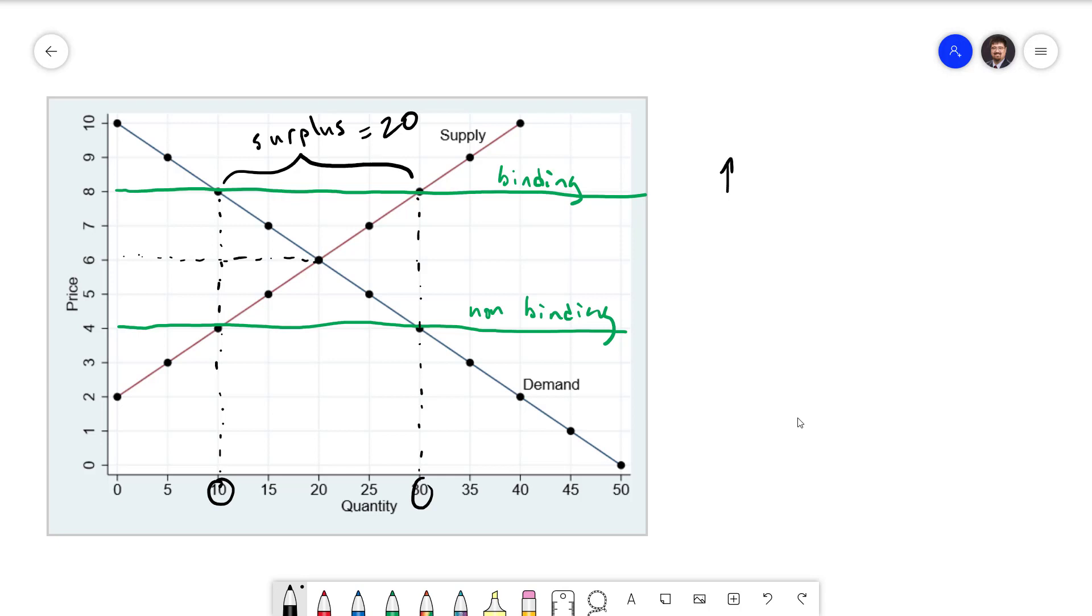The most famous price floor happens in the labor market. The labor market is one of those markets for the factors of production. The labor market looks pretty similar to a normal market except that the price is the wage and the quantity is the hours of labor. We'll call that L.